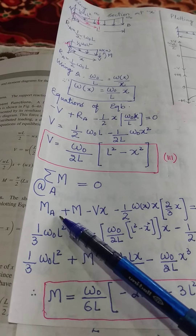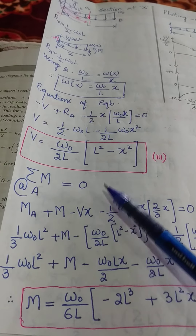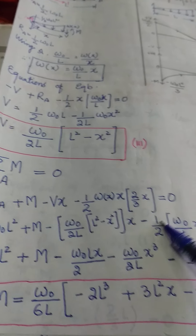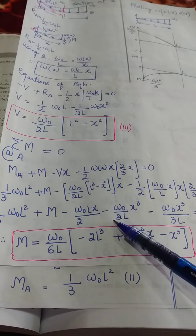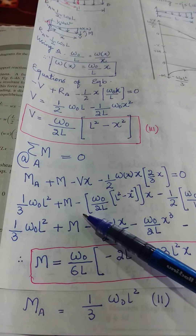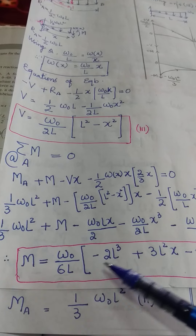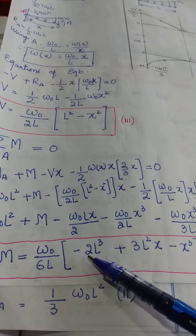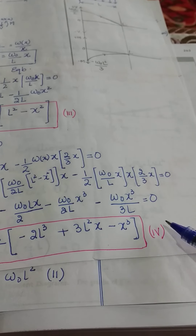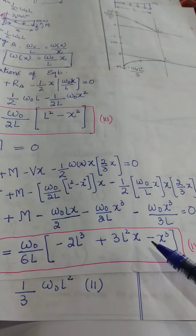Now we have M at A equal to one third of W naught L squared, and M is what we have to find out. V we know is equal to W naught divided by 2L into L squared minus X squared. Once we perform the algebraic calculations, we obtain the bending moment M. The value of this bending moment comes out equal to W naught divided by 6L, multiplied by negative 2L cubed plus 3L squared X minus X cubed. This is equation 4, which gives us the variation of the bending moment across the span of the beam.